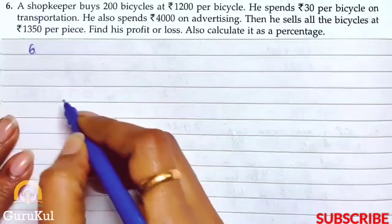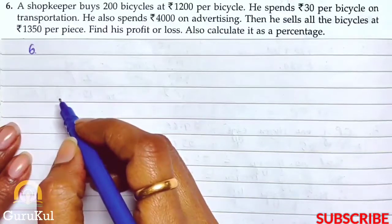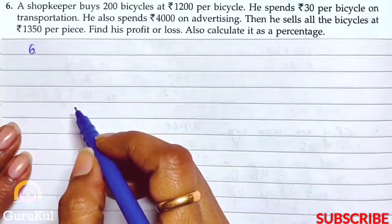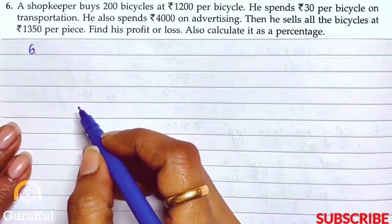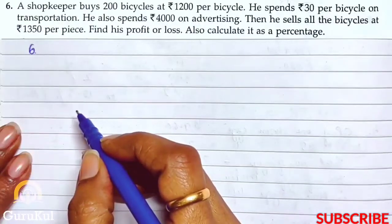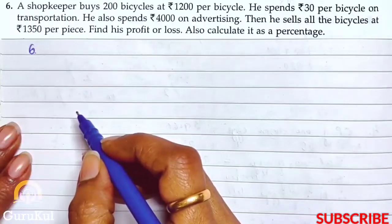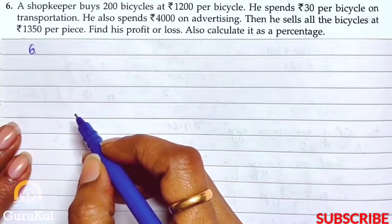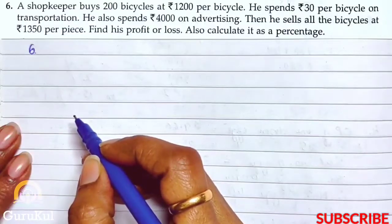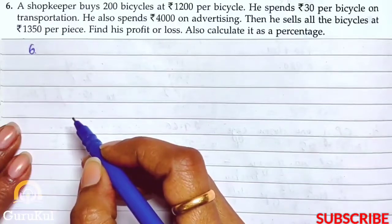Now, Question number 6. A shopkeeper buys 200 bicycles at rupees 1,200 per bicycle. He spends rupees 30 per bicycle on transportation. He also spends rupees 4,000 on advertising. Then he sells all the bicycles at rupees 1,350 per piece. We need to find his profit or loss and also calculate it as a percentage.